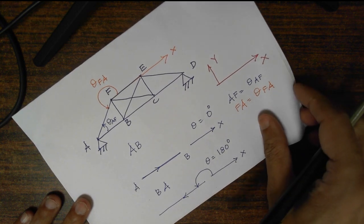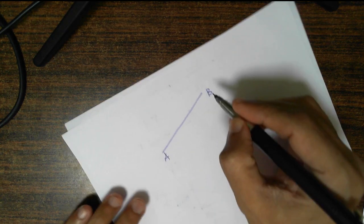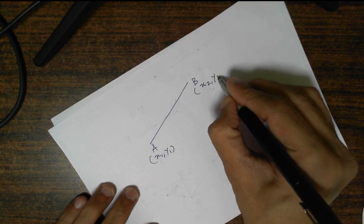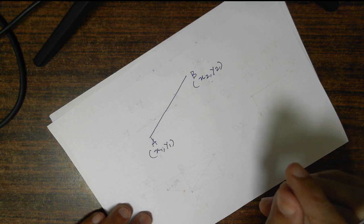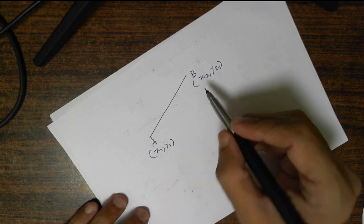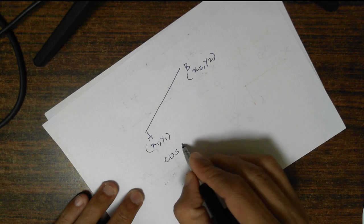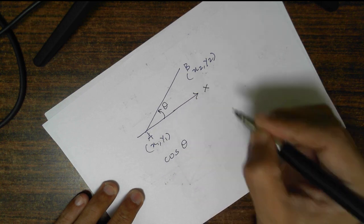Here is a simple formula to remember: for any member AB in a two-dimensional structure, where joint A has coordinates (x1, y1) and joint B has coordinates (x2, y2), and θ is the angle made with respect to the positive global x-axis in anti-clockwise direction, cos θ = (x2 - x1) / L, where L is the length of member AB.